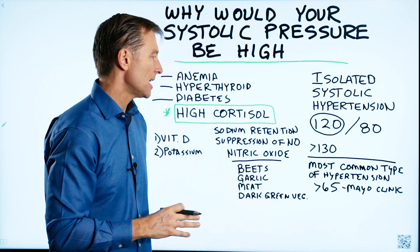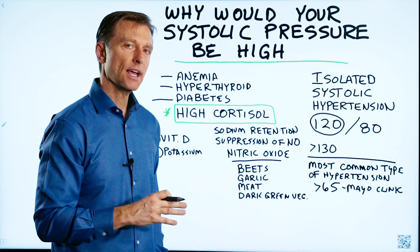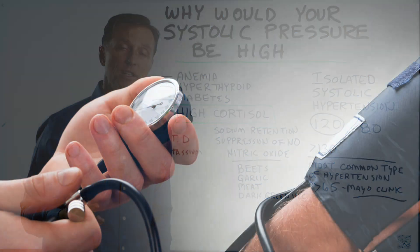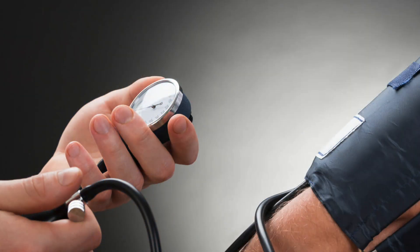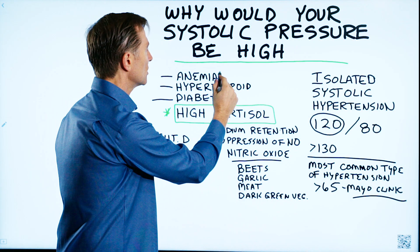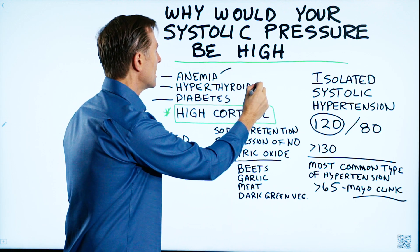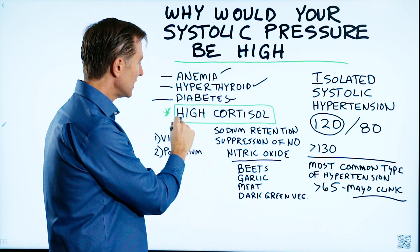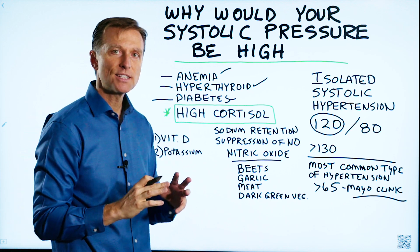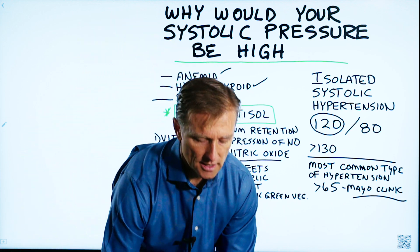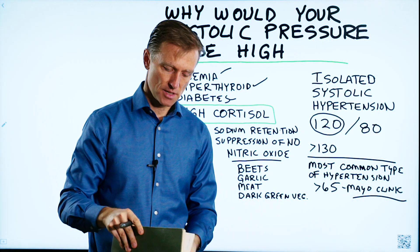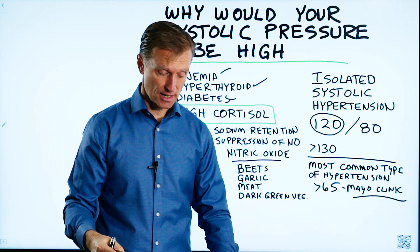This is the most common type of hypertension over the age of 65, according to the Mayo Clinic. The question is: what causes this? If you do Google searches, you'll see it could be anemia, hyperthyroid, or diabetes. But you won't find high cortisol unless you dig into other references, like this book — the Ciba Collection of Medical Illustrations, Volume 4, Endocrine System, page 86.